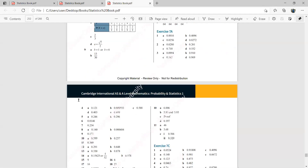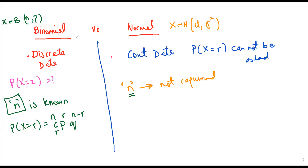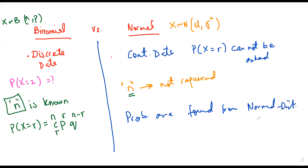There will be a table like this and we will be finding the probabilities through this table. I will tell you how to read that table shortly. So you need to be very clear about the differences and relations between the binomial distribution and the normal distribution — here the probabilities are found from the normal distribution table. These were the differences between binomial and normal distribution. Next I will be telling you the salient features of a normal distribution.